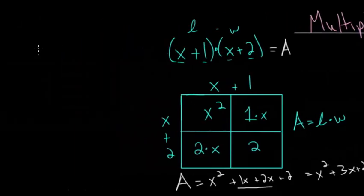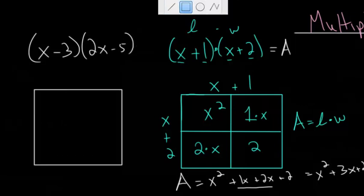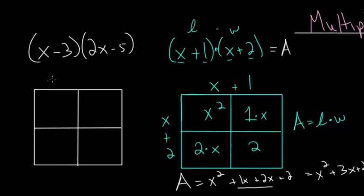For instance, if you had x minus 3 times 2x minus 5, you can still split it up into this rectangle, and we're going to split it into four parts. Now, because we don't know what x is, it's hard to guess how to split it, so we'll just split it evenly. So this could be x and minus 3 up here. This could be 2x and minus 5 right there. And we just find the area of each.